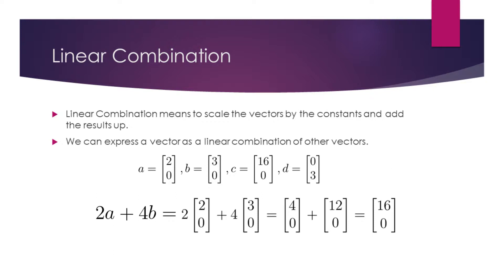Consider the vectors A, B, C, and D. If we scale the vector A by 2 and scale the vector B by 4, we can express C as a linear combination of A and B.